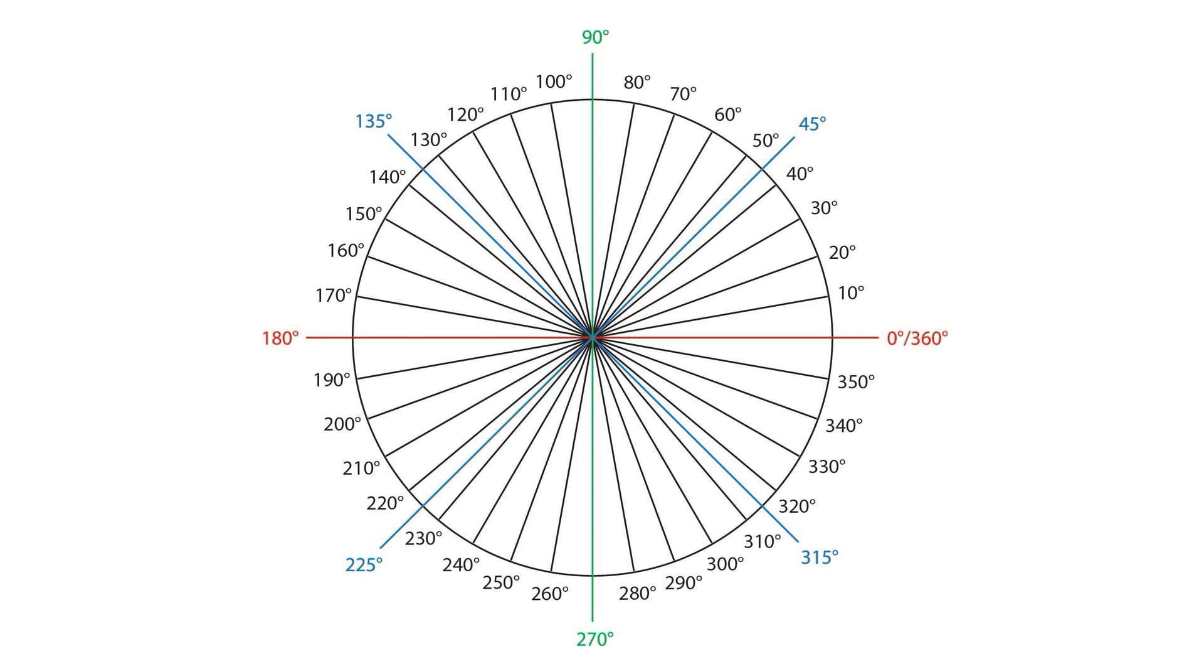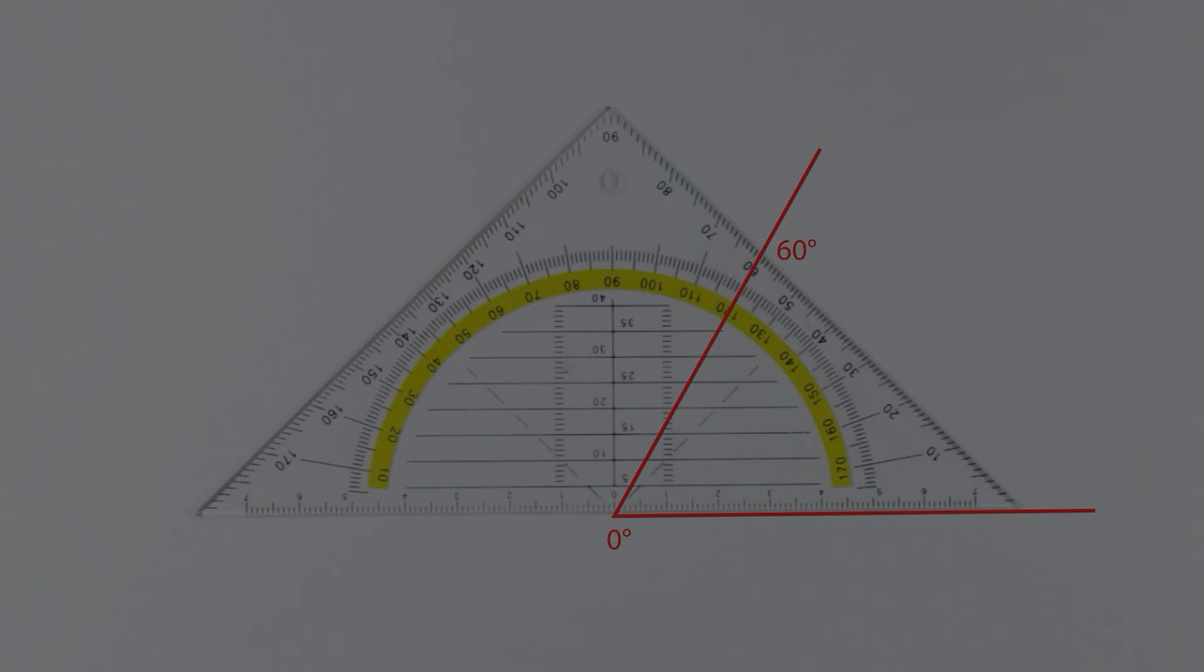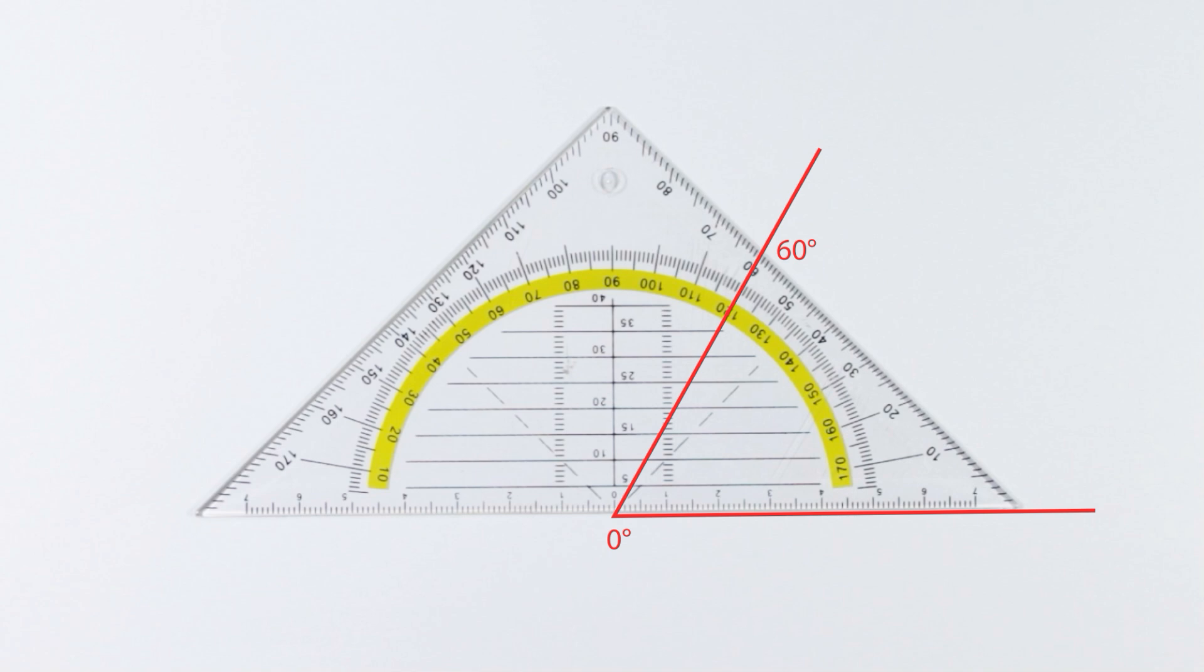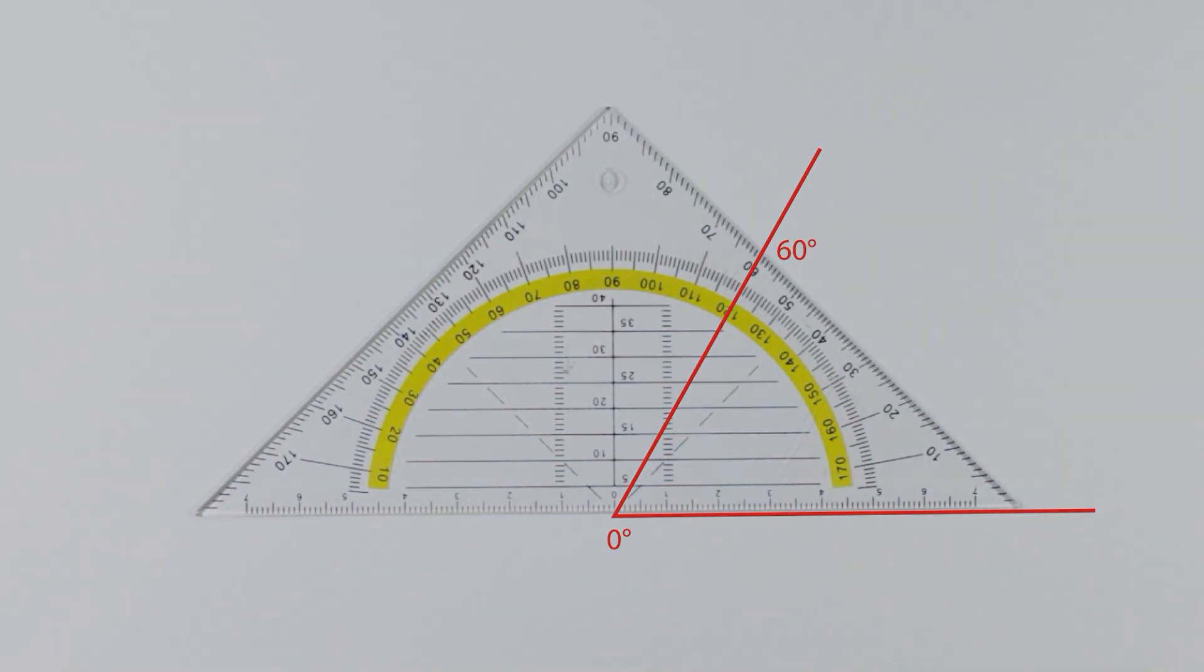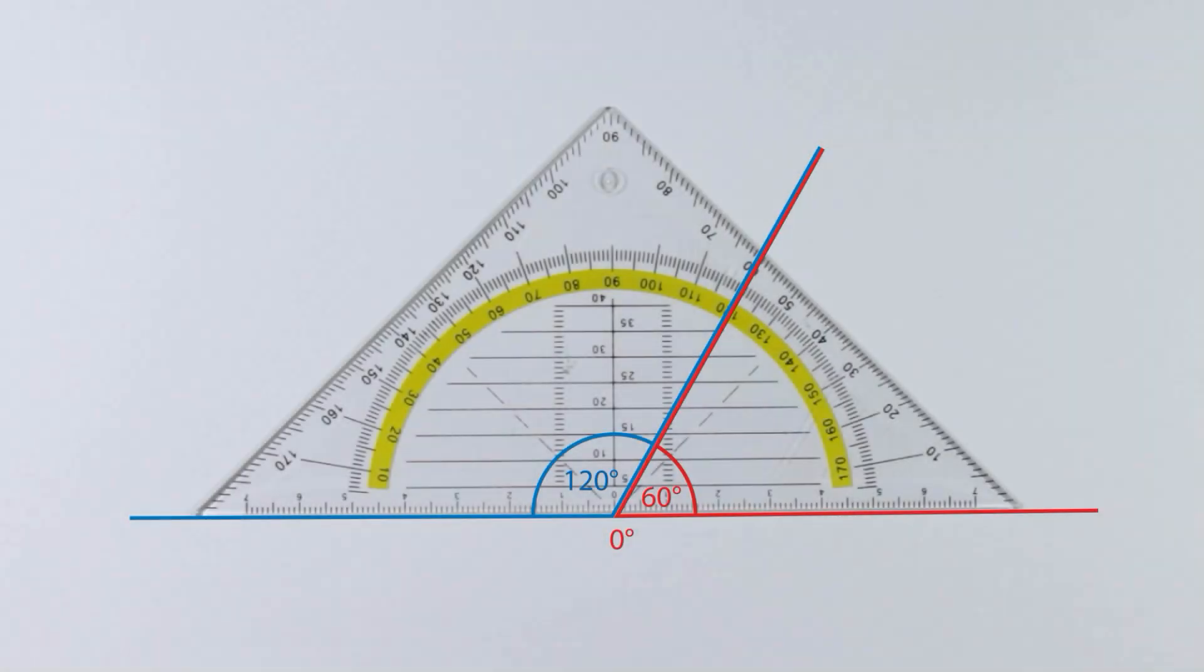A full circle has 360 degrees. The yellow circular scale shows the degrees the other way round. Hence, on the outer edge we can see 60.